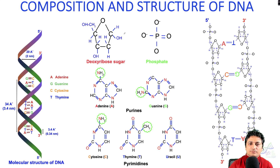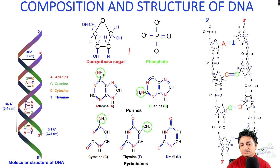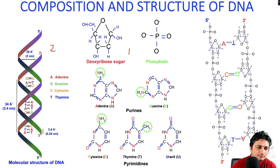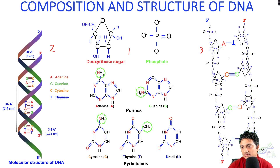First I will go through the different components of DNA — sugar, phosphate, and different bases including purines and pyrimidines. Second, I will be talking about the molecular structure of DNA, and third I will talk about the chemical structure of DNA.